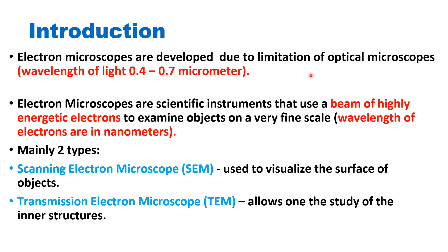Electron microscopes were developed due to the limitations of optical microscopes, because visible light has a wavelength in the range of 0.4 to 0.7 micrometers. Electron microscopes are instruments which use a beam of electrons to see objects at a very fine scale, and electrons have a wavelength of around a few nanometers.